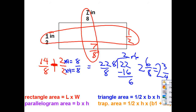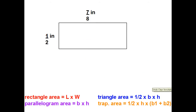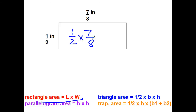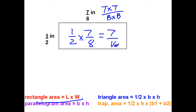For the area of the rectangle: length times width — one-half times seven-eighths. Multiplying fractions is top times top over bottom times bottom. Top times top equals 7, bottom times bottom: two times eight is sixteen. Seven-sixteenths — no need to simplify. The area is seven-sixteenths square inches.